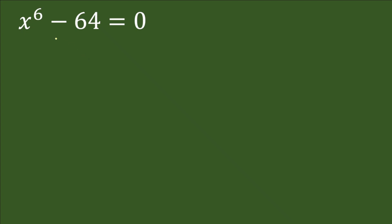Hey friends, welcome back. Today in this session we will solve this equation for all possible values of x. We have the equation x⁶ minus 64 equals 0.